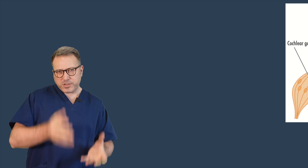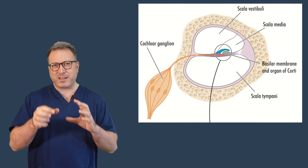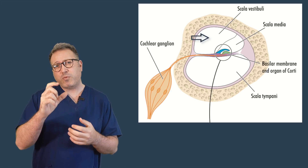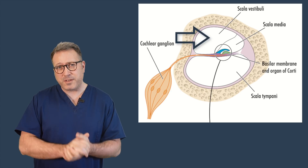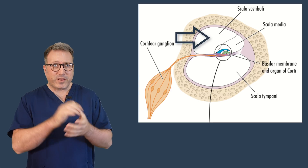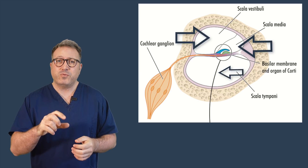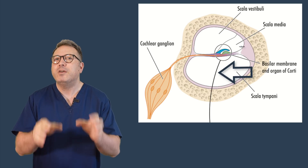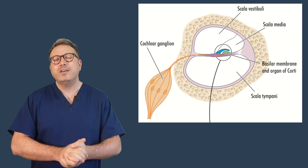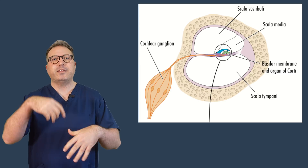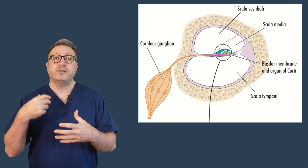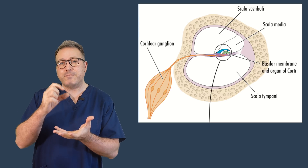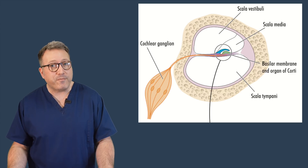If we take a cross section of the cochlea we can see that there are three different ducts. The top one is the scala vestibuli, the middle one is the scala media, and the bottom one is the scala tympani. You just need to know that they're there. Inside the scala vestibuli and the scala tympani is a fluid called perilymph, and inside the scala media is a fluid called endolymph.